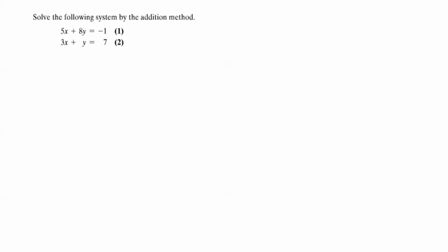We're going to be able to add the two equations together to get a new equation. But we want to fix it so that when we add the two equations together, one of the variables will be eliminated. That's why we call it the addition method or the elimination method.